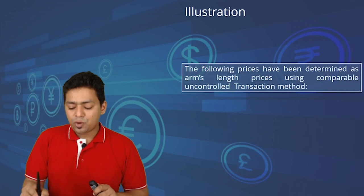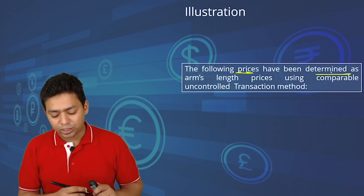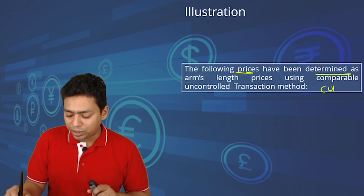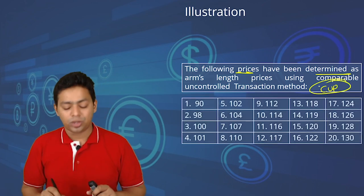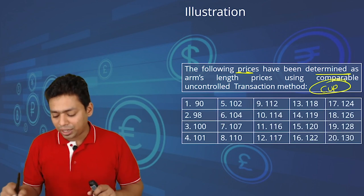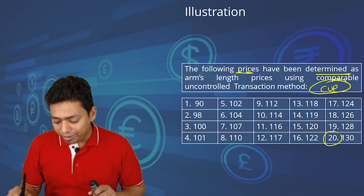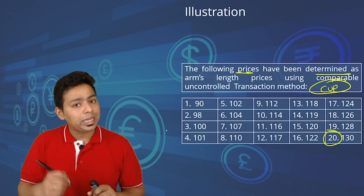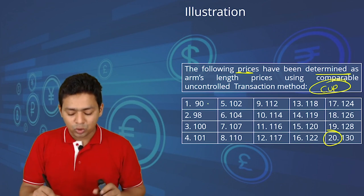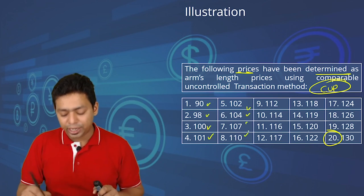Let's look at a practical example. From the following prices determined using the CUP method — there are 20 values total, already arranged in ascending order, ranging from 90 to 130. Because there are 20 samples, we must apply the 35th and 65th percentile. In an exam, data may not be given in ascending order, so you must sort it first.